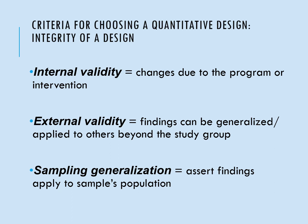External validity is where findings can be generalized and applied to others beyond the study group. We want to make sure our findings can be generalized to a broader population. Sampling generalization is when you assert findings that apply to this sample's population. When you have good internal and external validity, you can really say this is what I found with my sample and it applies to the population.